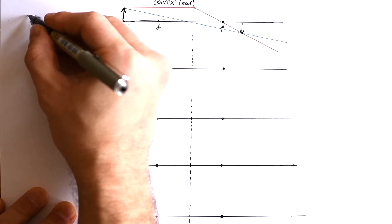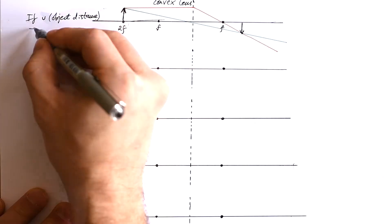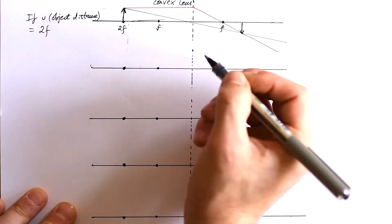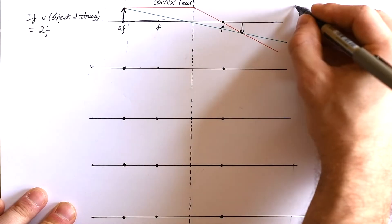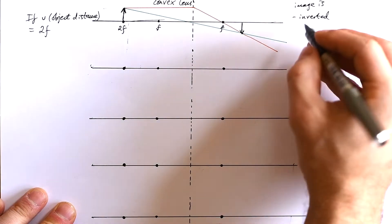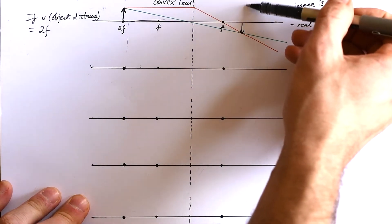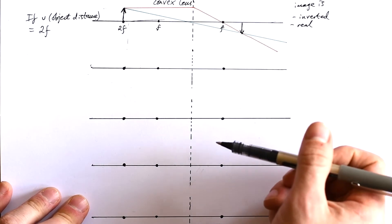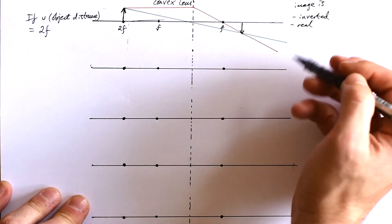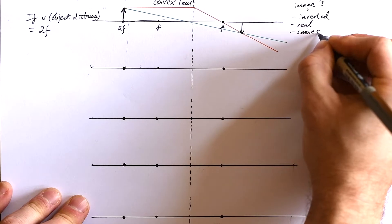It's going to be upside down. If the object distance equals two times the focal length, we can say the image is inverted. It's also real because it can be projected. If I put a screen there, we'll see an image because the light rays are focusing at that point. It's also the same size as the object.